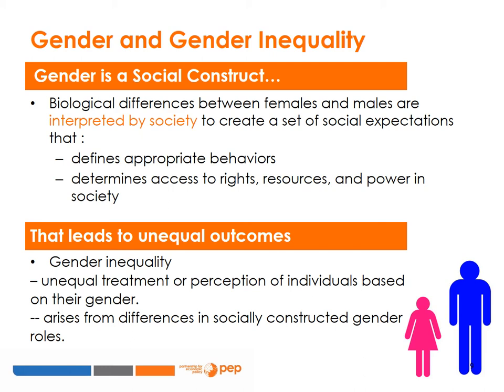Does gender inequality stem from differences in sex or from gender norms? Gender is a social construct in the sense that society defines and differentiates the roles, rights, responsibilities and obligations of women and men. Biological differences between females and males are interpreted by society to create a set of social expectations that define the behaviours appropriate for women and men and determine women's and men's differential access to rights, resources and power in society. These in turn influence the often unequal outcomes in the treatment, economic behaviour and activities of men and women.